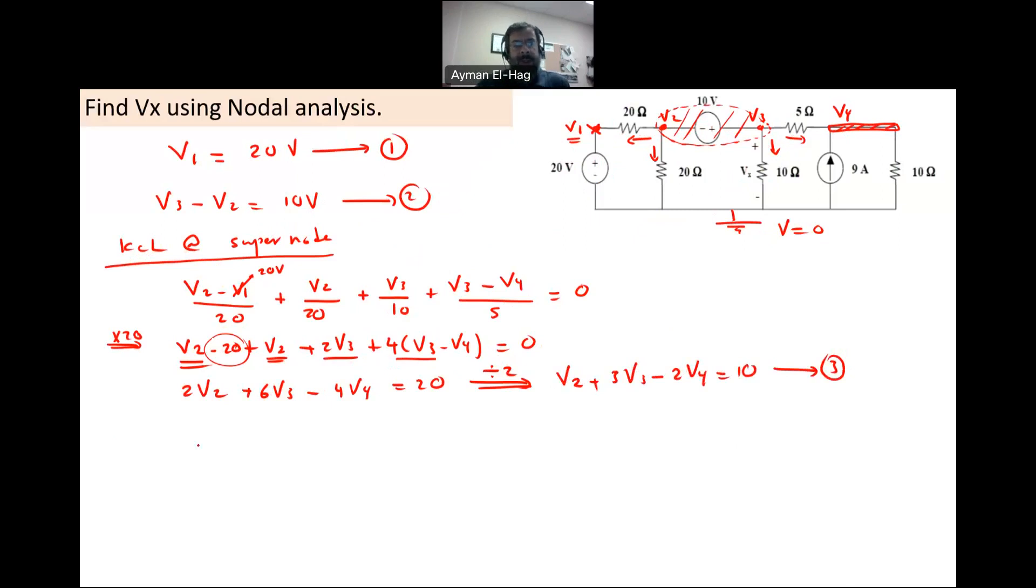Now the last point is node V4. So KCL at V4 - assume the currents are leaving. We don't care what was the assumption of the current in the step before that. So we'll have here V4 minus V3 divided by 5 plus the current that goes down here, V4 divided by 10, and then the 9 amps is actually entering the node, so this equals 9. Now I will multiply by the least common denominator. I'm going to multiply by 10. Then we'll have 2V4 minus 2V3 plus V4 is equal to 90. Then we'll have minus 2V3 plus 3V4 is equal to 90, and this is my fourth equation.